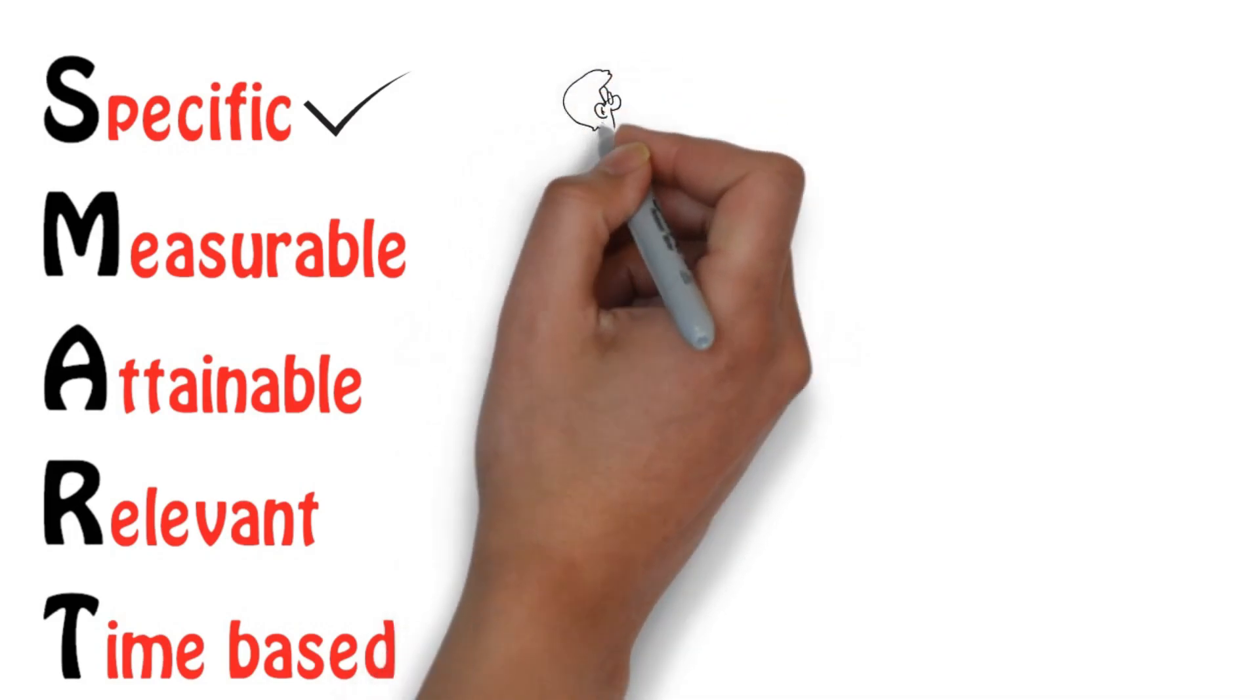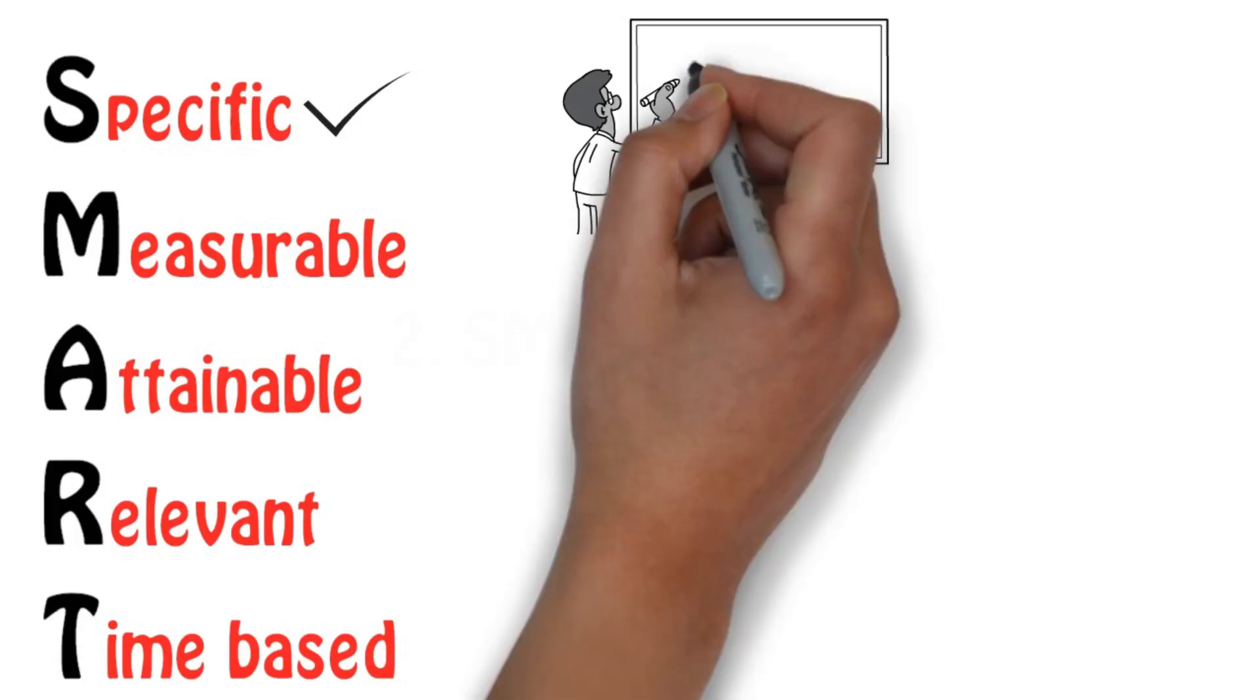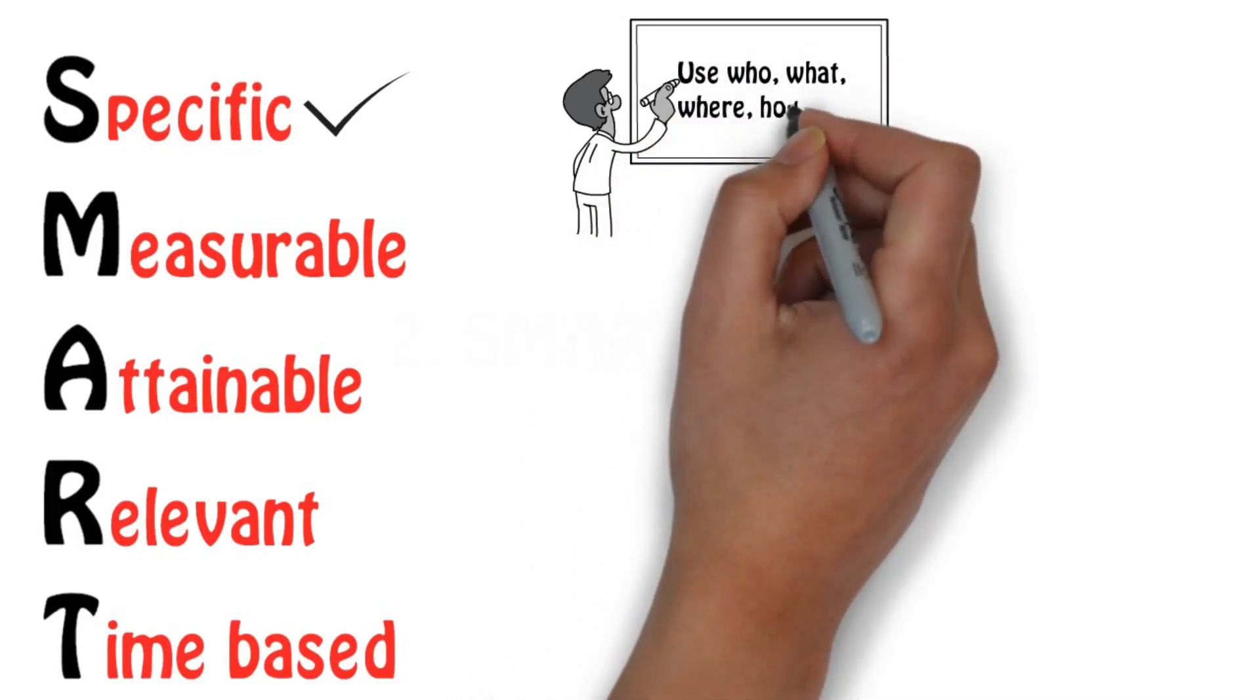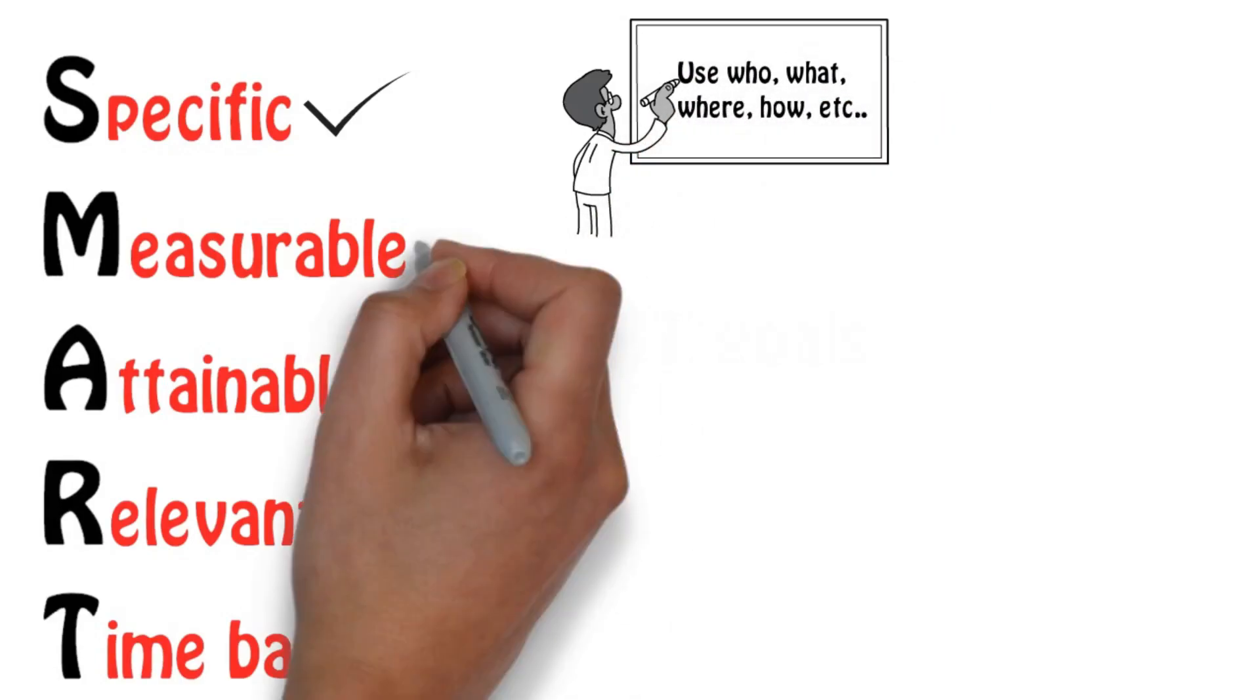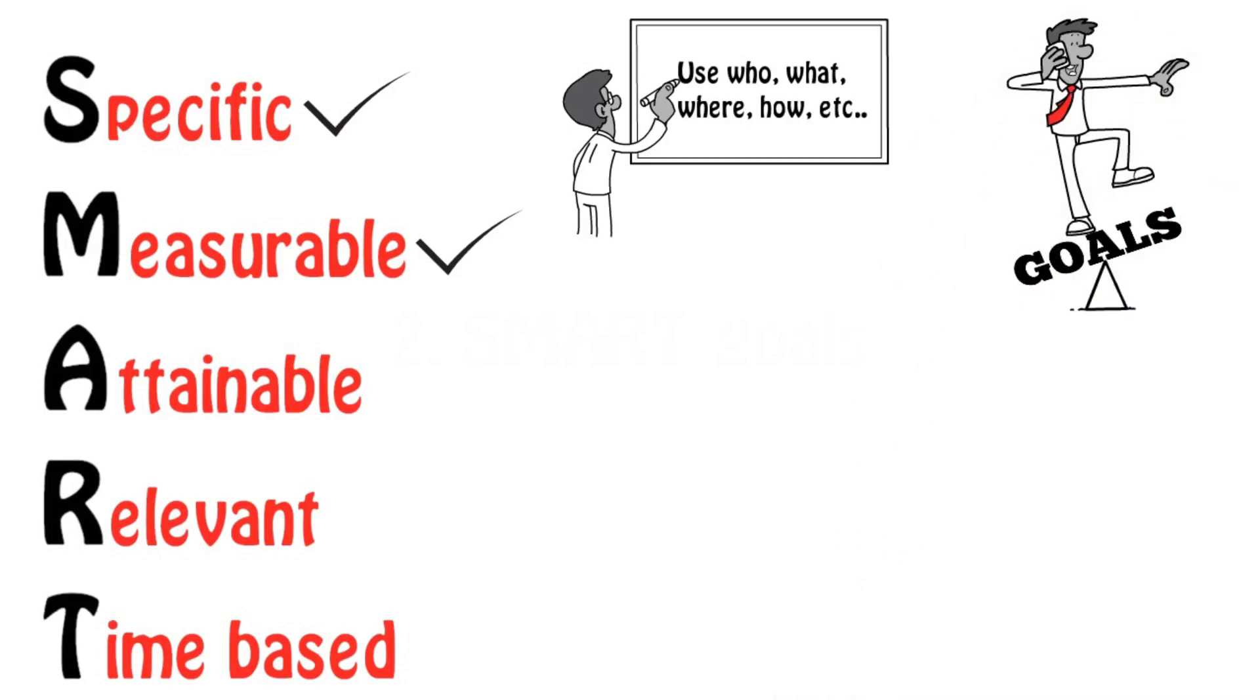S, specific: highly detailed statement on what you want to accomplish. Use who, what, where, how. M, measurable: How will you demonstrate and evaluate how your goal has been met?